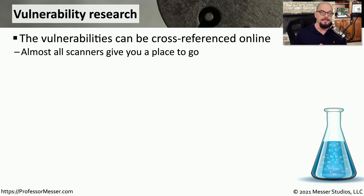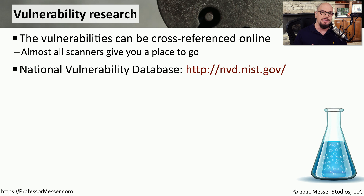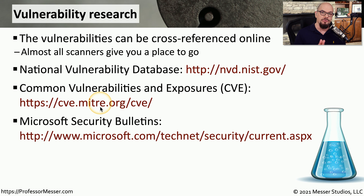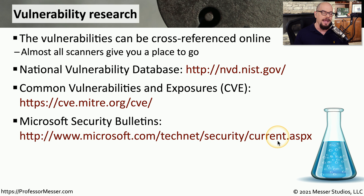If you're performing these vulnerability scans, you'll be doing a lot of research prior to and after the scan is complete. There are many resources online that can help you make decisions when vulnerabilities are found. One very common place to go is the Consolidated CVE Database at the National Vulnerability Database, found at nvd.nist.gov. This is a summary of all of the CVEs that you can also find at the Common Vulnerabilities and Exposures Database at cve.mitre.org. You might also want to go directly to the manufacturers themselves — for Microsoft Windows, you'll find those Microsoft security bulletins at www.microsoft.com/technet/security/current.aspx.